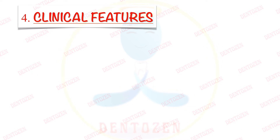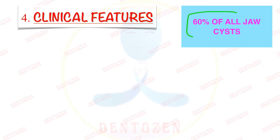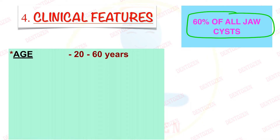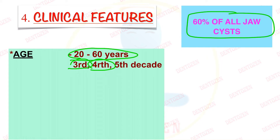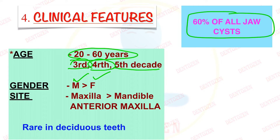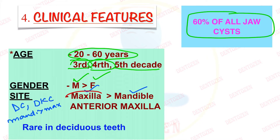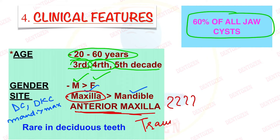Regarding clinical features, radicular cyst is the most common odontogenic cyst, constituting about 60% of all jaw cysts. It can occur between the ages of 20 to 60 years, with a peak in the third decade; many cases are seen in the fourth decade, and after the fifth decade cases start to decline. Males are affected more than females. Regarding site, the maxilla is affected more than the mandible.